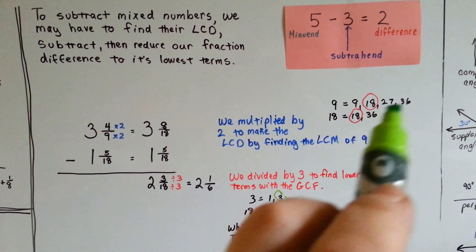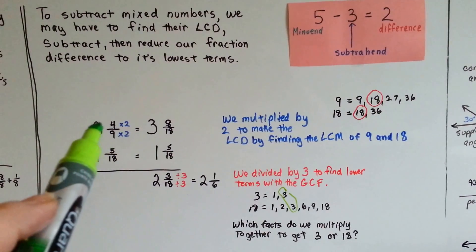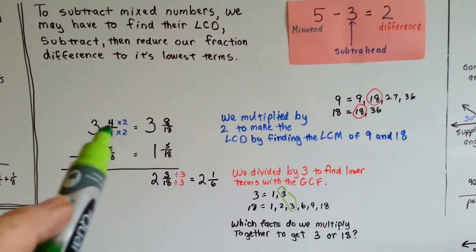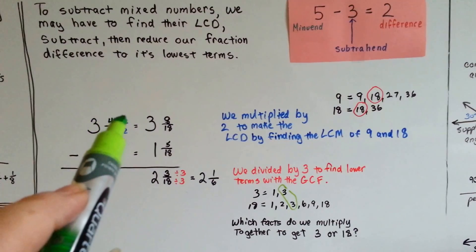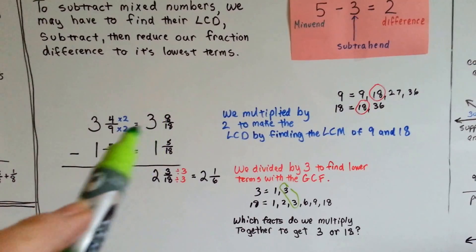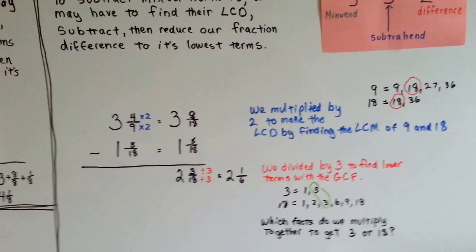There is a thirty-six, but it's not the lowest. So nine is going to go to eighteen's house. Eighteen's just going to slide on over, and nine is multiplied by two. The four gets jealous. He gets multiplied by two, and we end up with three and eight-eighteenths minus one and five-eighteenths. Now we can subtract.